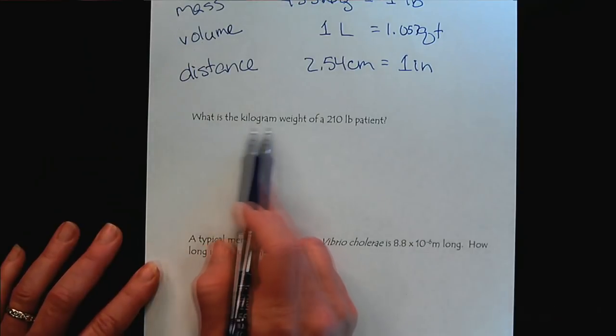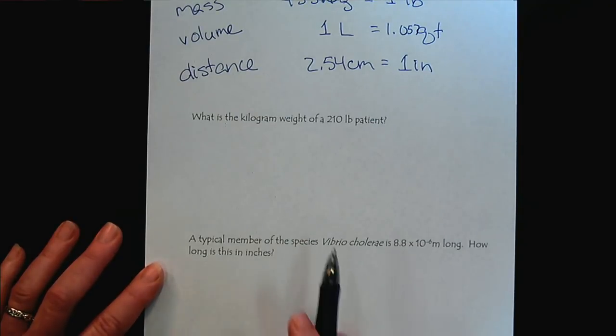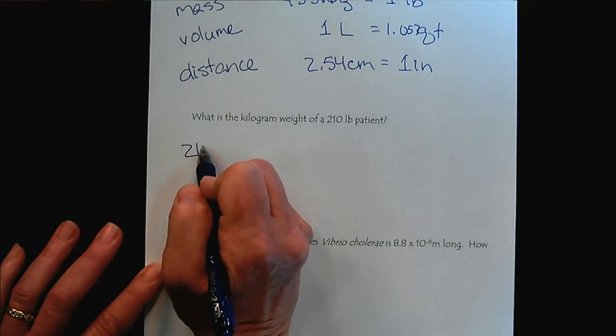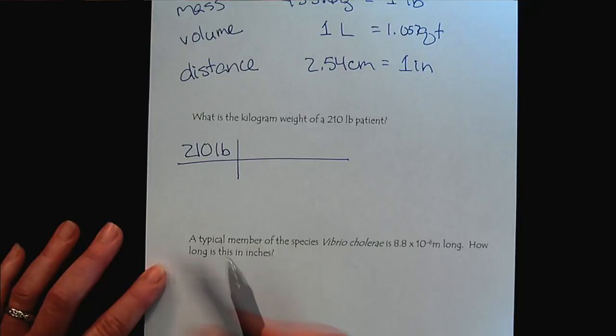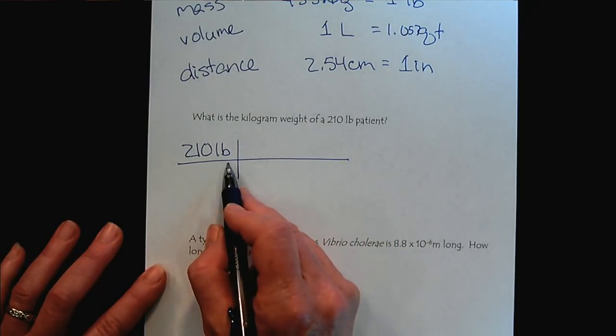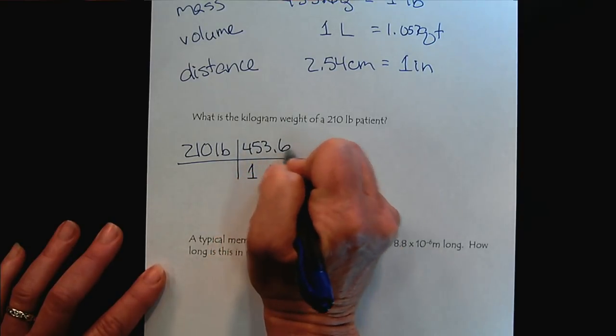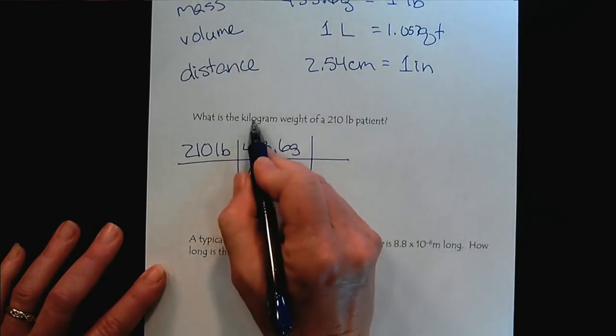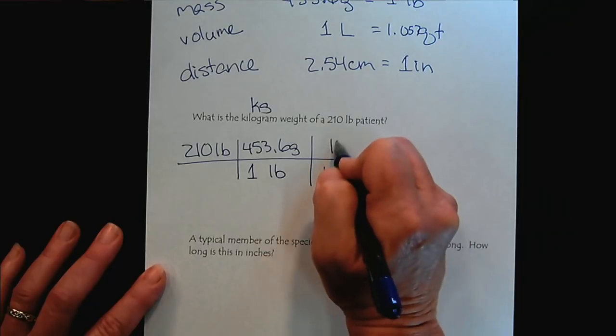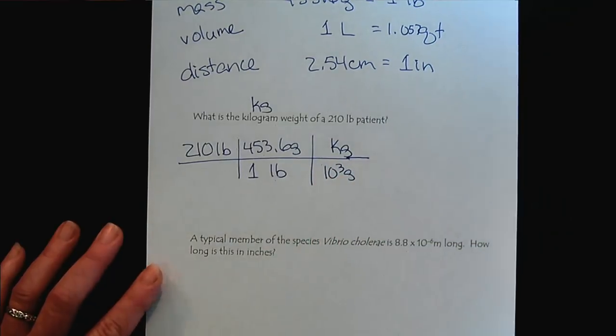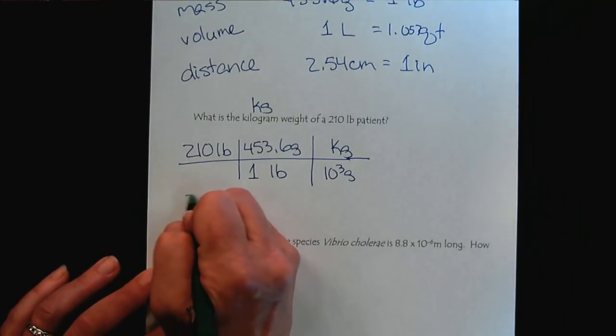What is the kilogram weight of a 210 pound patient? This is a very common conversion. So we start with the weight of the patient in pounds. And then here, my bridge is not necessarily the best bridge. We have one pound, 453.6 grams. And then we're trying to get to kilograms. So then we would have to say that there are a thousand grams in a kilogram. So some of you might have gone, man, there's an easier way to do that, and there is. So let's go that way too.